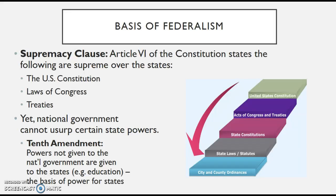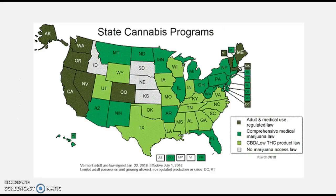There have been actual issues — especially under former President George Bush — where he instructed the DEA to raid medical marijuana shops, even though it was legal in California under state law. It is still illegal at the federal level, so even if you are utilizing marijuana in a state that allows it, whether for medical or recreational purposes, you are still breaking federal law and could theoretically be arrested.